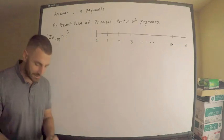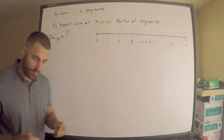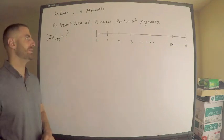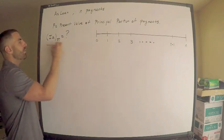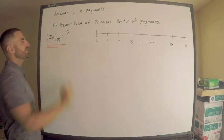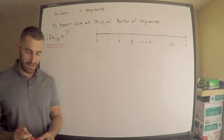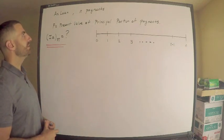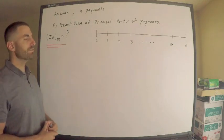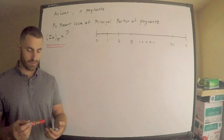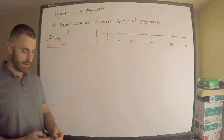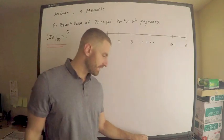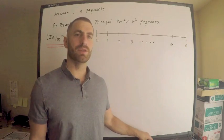We're looking for an expression for an increasing annuity immediate. I want to know what is an expression for this quantity. Let's first write down the loan amount — this shouldn't be too confusing.